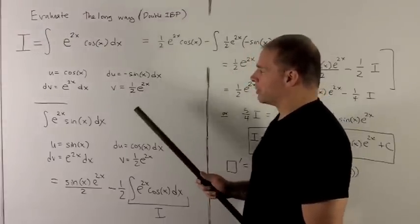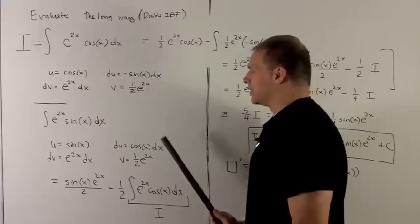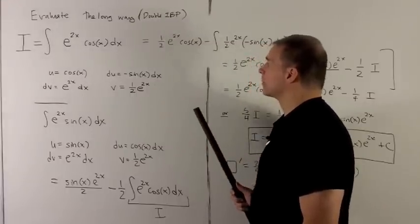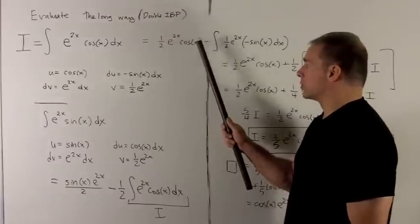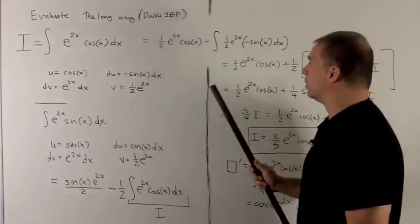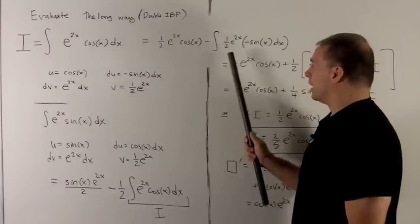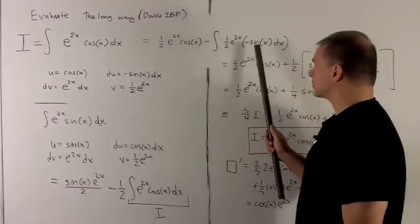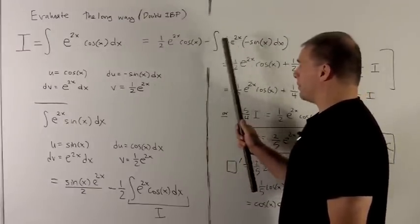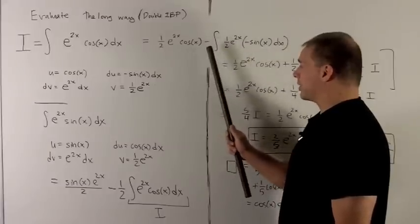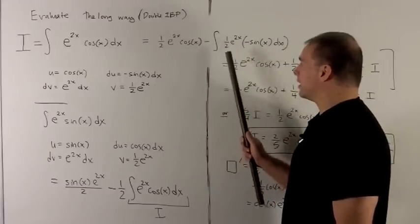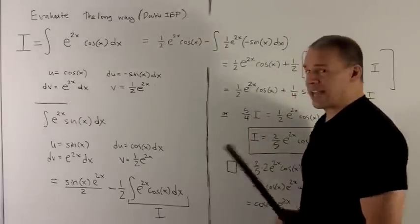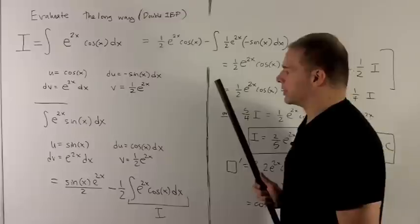So integration by parts says multiply along the diagonal, then subtract the integral of what you get multiplying up. So that's going to give me a half e to the 2x cosine x going down the diagonal, minus one half e to the 2x times minus sine x dx. We can pull the minus signs together to get them to disappear. I can pull the half out, and then I'm left with e to the 2x sine x dx. So let's handle that by itself, and then we'll put it back in with parentheses.